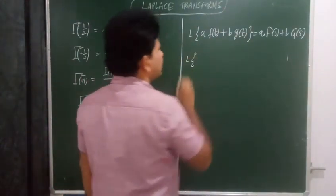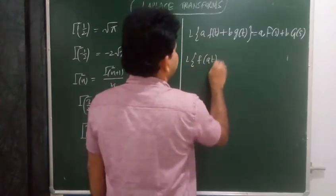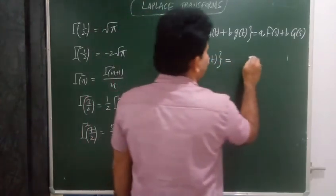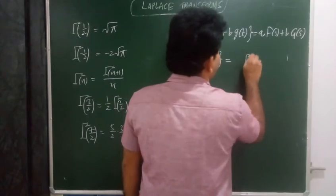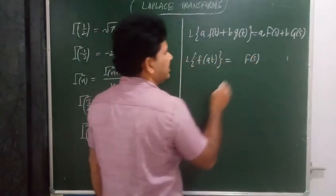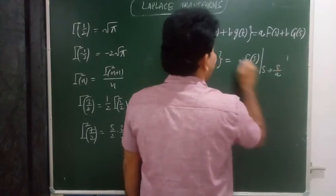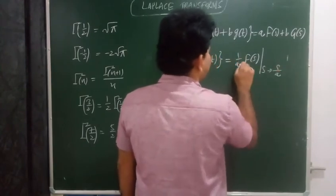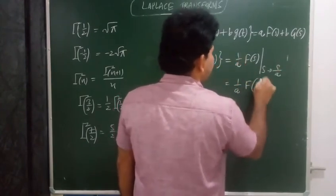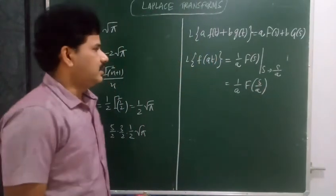Change of scale property: L{f(at)} equals — since t is scaled by a, s is replaced with s upon a — giving (1/a) times F(s/a). For example, Laplace transform of sin(3t): we know L{sin(t)} is 1 over s squared plus 1, where s is replaced with s/3 and multiplied by 1/3, giving 3 upon s squared plus 9.